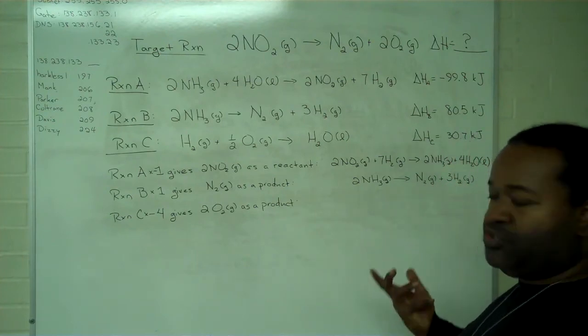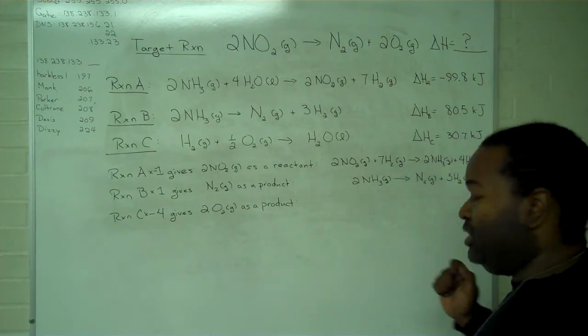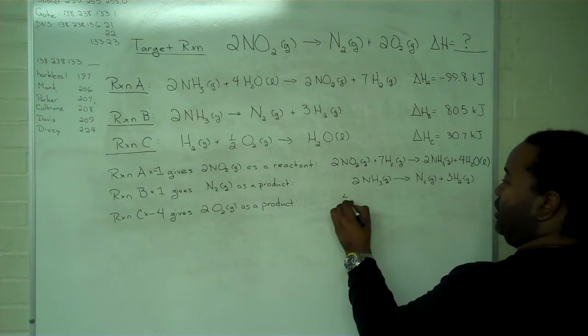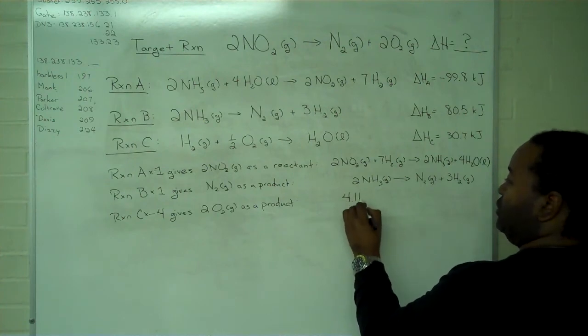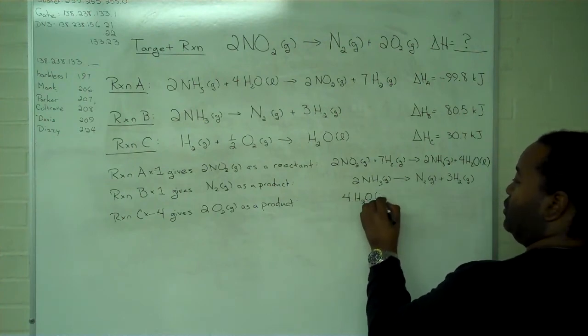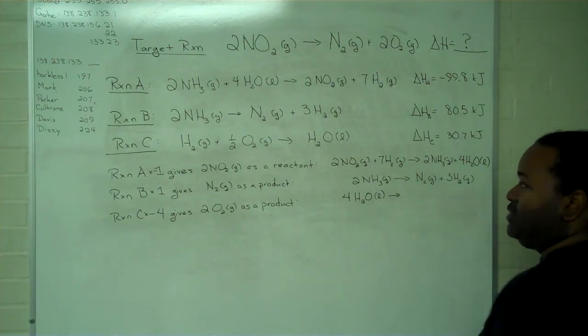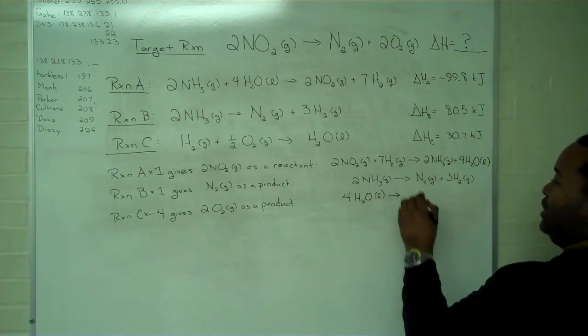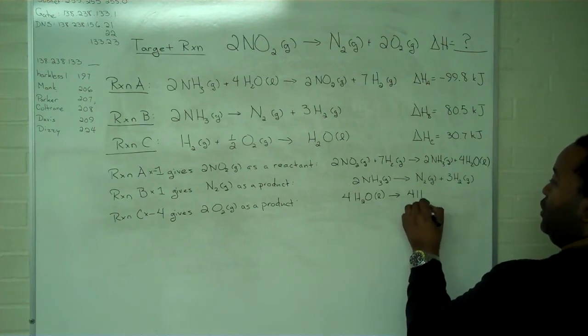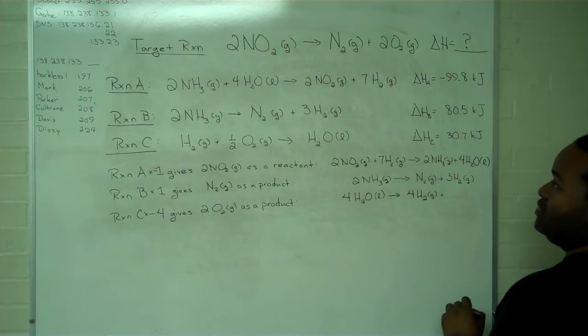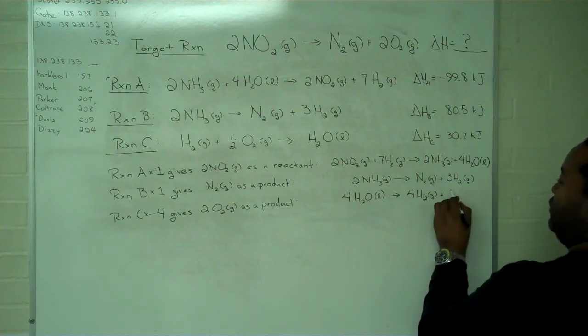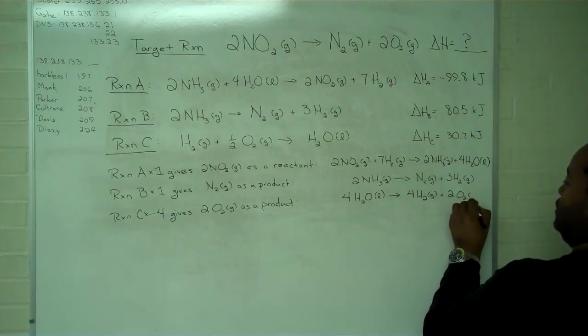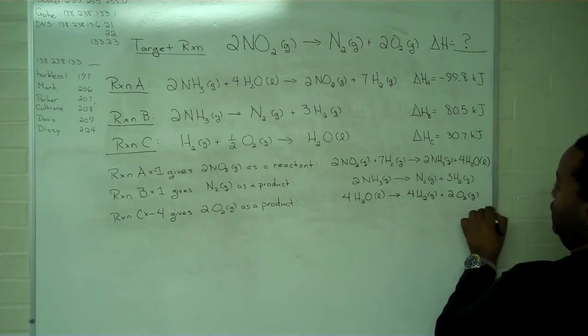And so in this case, we want to make sure that we do it properly. So I will have four times one, which is four waters as a reactant. Four times one gives me four hydrogens as a product, and four times one half gives me the two oxygens as a product that I was looking for.